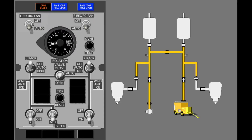Open the isolation valve. Because the external air cart supplies the air for the bleed air system, the APU bleed is not necessary. Turn off the APU bleed. When an external air cart supplies air, you can select the packs to auto or high. Turn both packs to auto.